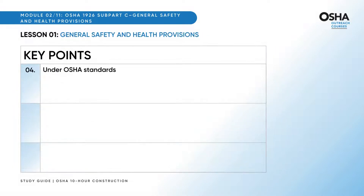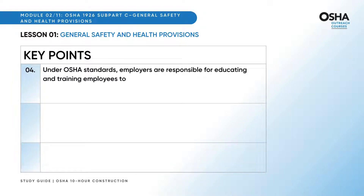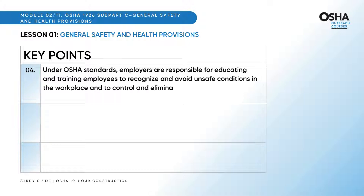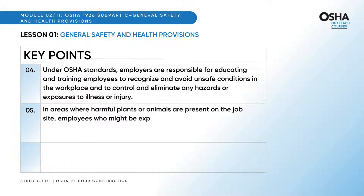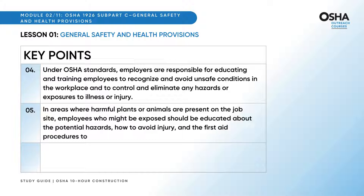Under OSHA standards, employers are responsible for educating and training employees, recognizing and avoiding unsafe conditions in the workplace, and controlling and eliminating any hazards or exposures to illness or injury. In areas where harmful plants or animals are present on the job site, employees who might be exposed should be educated about the potential hazards, how to avoid injury, and the first-aid procedures to be used in the event of injury.